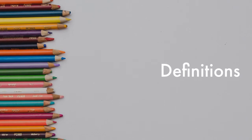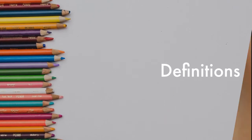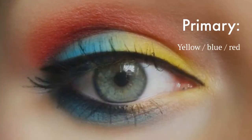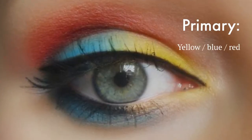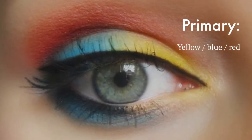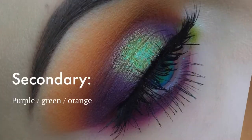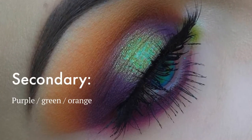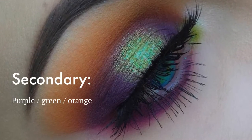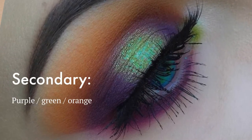We can define colors. Colors can be primary: yellow, blue, or red. Secondary: purple, green, or orange.